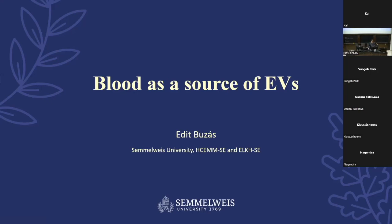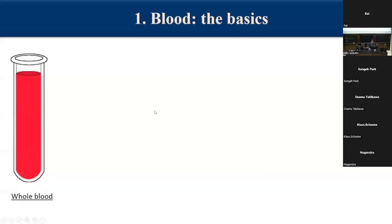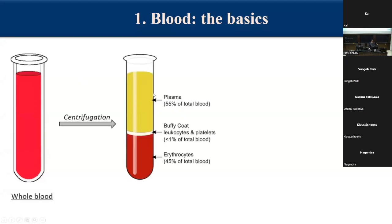I was asked to talk about blood as a source of EVs, and since this is an education day, I hope you forgive me if I start with the very basics. We have the whole blood, and if we subject it to a brief centrifugation after dilution, we end up with plasma, the red blood cells at the bottom, and the buffy coat in between as a layer composed of leukocytes and platelets. The ratios are approximately 55%, one percent or less, and 45% red blood cells.